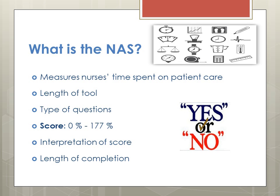Once you have answered all the questions, the tool will give you a score from 0 to 177%. So what does this actually mean? 100% means one nurse to one patient. 50% means that perhaps a patient can be doubled, so one nurse to two patients. Anything over 100% means that probably you need another nurse. There are actually 9 champions throughout your nursing team who have reviewed the tool with me to make sure the questions are clear. Your colleagues have also been testing the tool on their patients and have told me it takes approximately 3 to 5 minutes to complete.